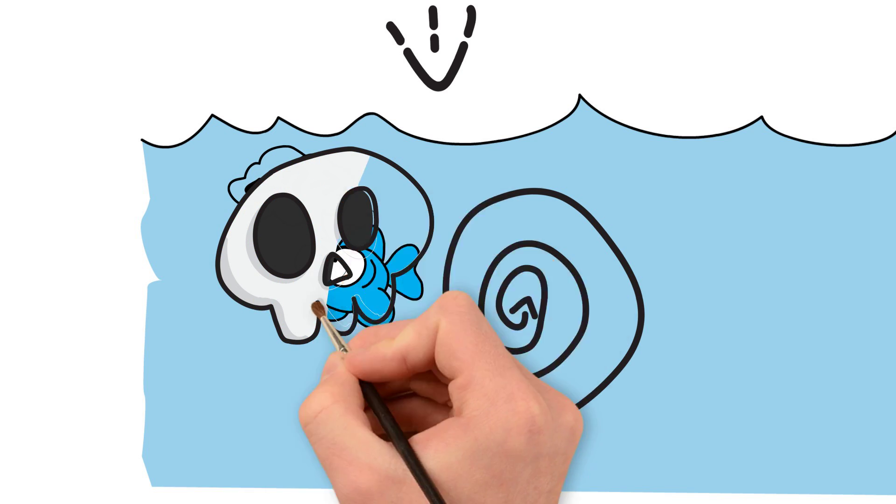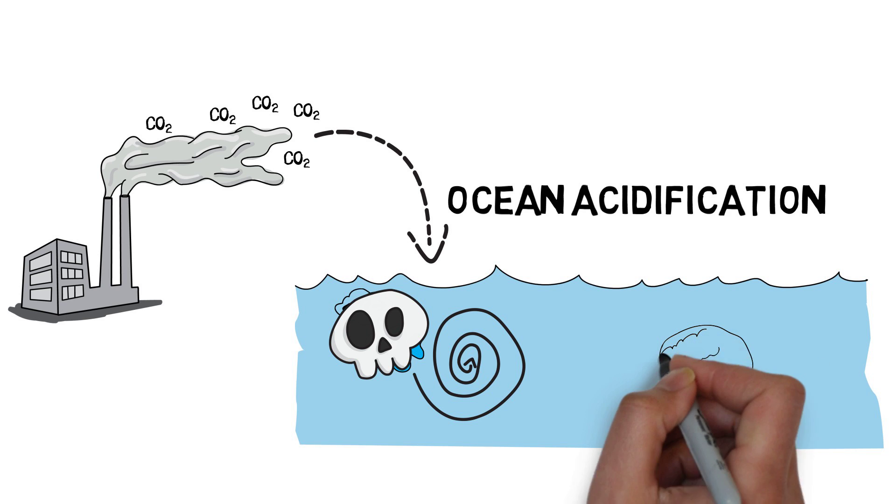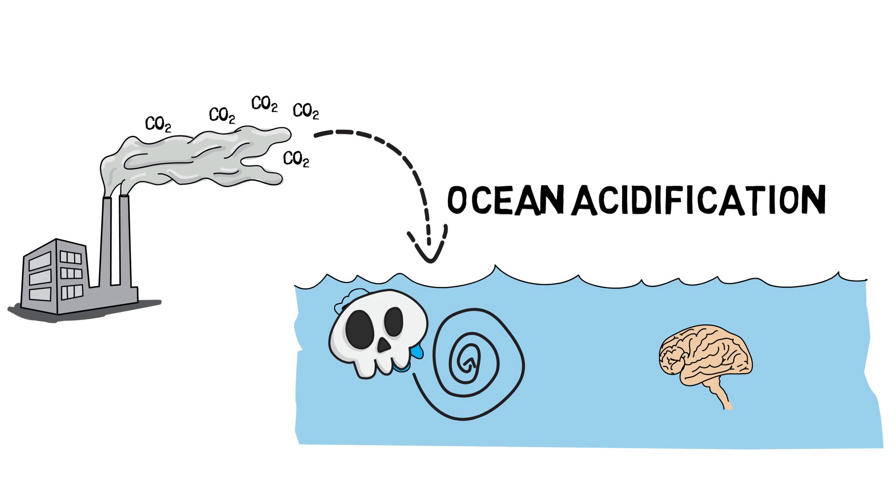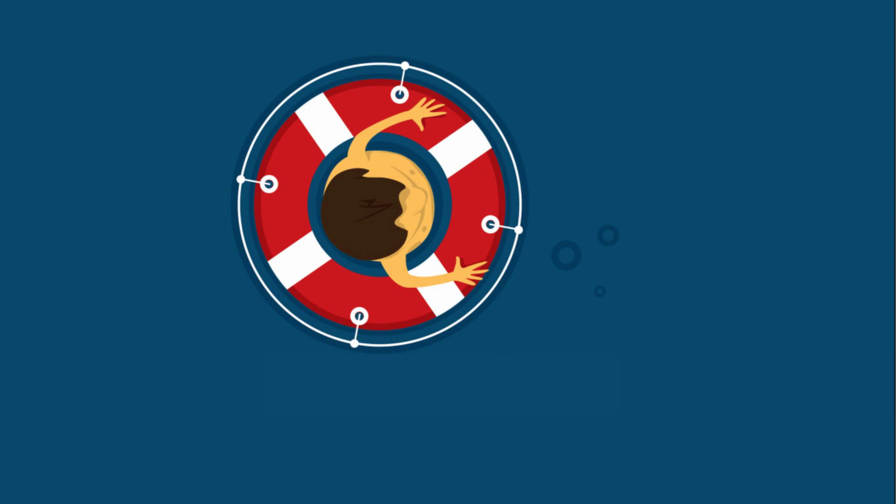So now imagine to be that baby fish at the end of the century. Ocean acidification is now interfering with the functioning of your brain and your instincts are telling you to go into the wrong direction. You're literally a fish lost at sea. You have little chances of survival and you will probably never reach dinner plate size.